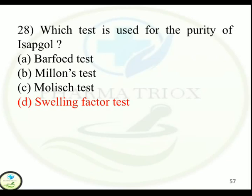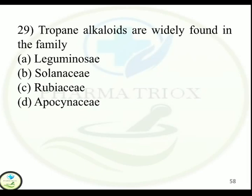Question 29: Tropane alkaloids are widely found in the family — Option A: Leguminosae. Option B: Solanaceae. Option C: Rubiaceae. Option D: Apocynaceae. Correct answer is Option B — Solanaceae.